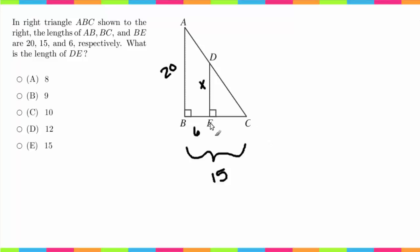So first thing I have to do is figure out what EC is. So EC is simply going to be equal to 15 minus 6, because you have this 6 here out of the total 15. So you could subtract those to get 9. So this here is 9.